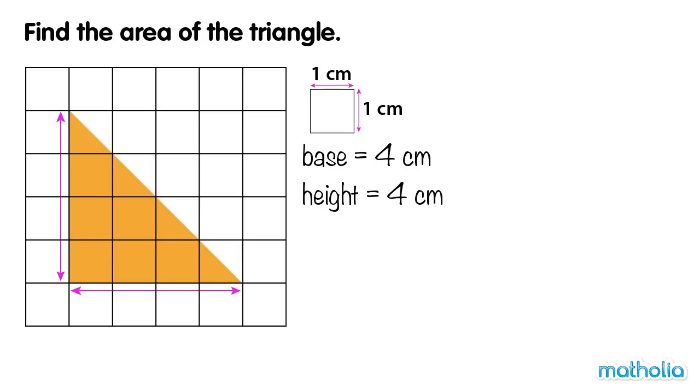A square can be formed from the base and the height. The area of this square is given by multiplying the base by the height. 4 cm times 4 cm equals 16 cm squared.